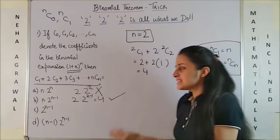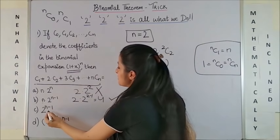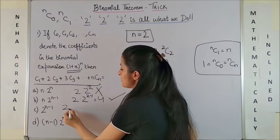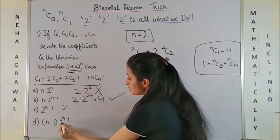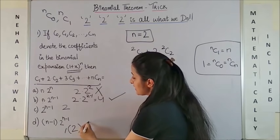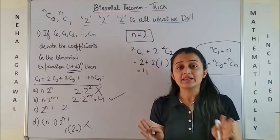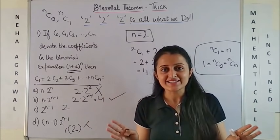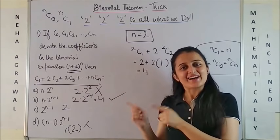Now you have to put n equal to 2 in these options and see which one gives you the answer 4. That is it. So if I begin with the first one, this gives me 2 into 2 square. Certainly not the answer. If we go to option B, it will be 2 into 2 raised to the power 2 minus 1. So this will give me 2 into 2. That's 4. Yes, that is right. Still to be sure, you can go ahead and check more options. So this will be 2 raised to the power 2 minus 1 which will be 2 and this will be 2 minus 1 raised to the power 2 minus 1, again 2. So that's your answer. And trust me, it doesn't take more than 10 seconds. In fact, at times it doesn't even take that much.